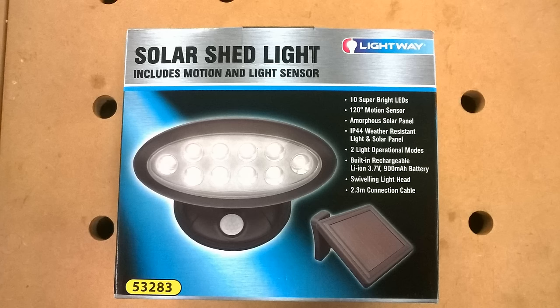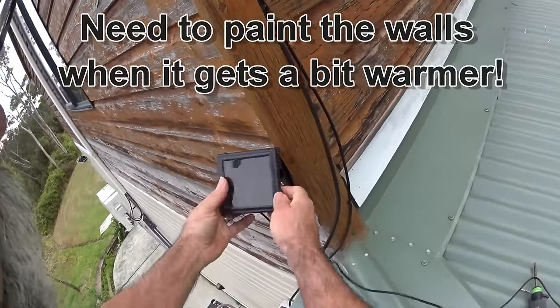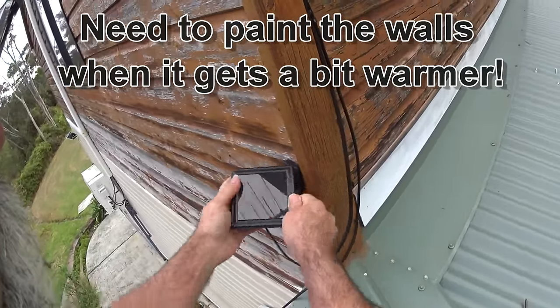Now how I got around that was I purchased a light that has a cable and a small solar panel on the end of the cable. So the cable is about two meters long. I position that solar panel up on the wall above the roof so it has full sunlight.